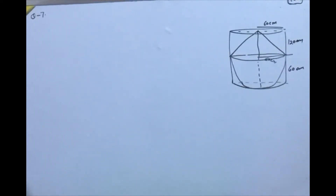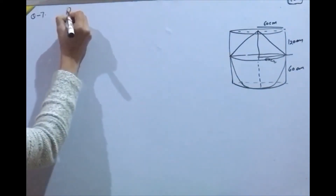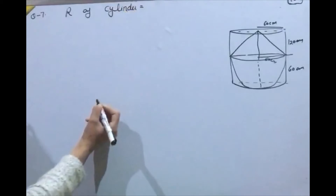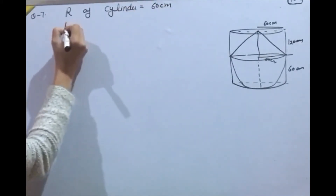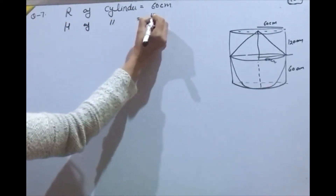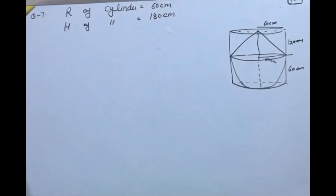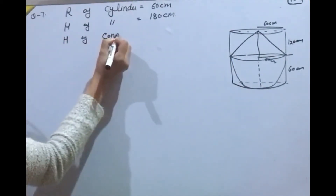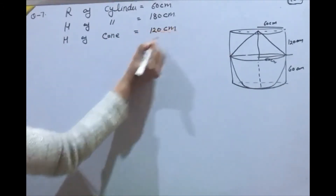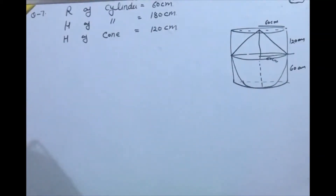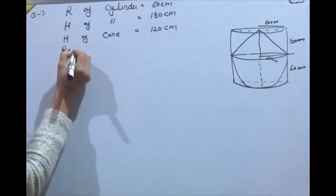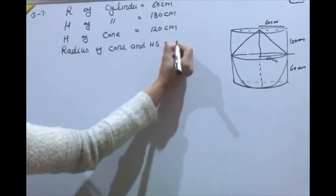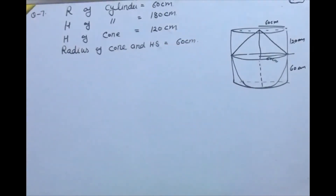Given values: radius of cylinder = 60 cm, height of cylinder = 180 cm, height of cone = 120 cm, radius of cone and hemisphere = 60 cm. We will find the volume of the cylinder, cone, and hemisphere separately.